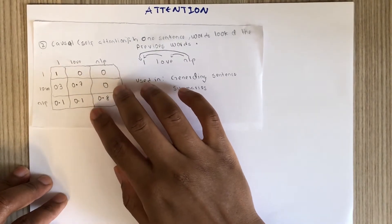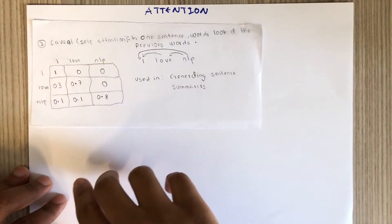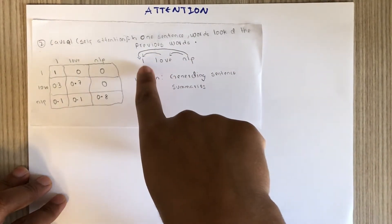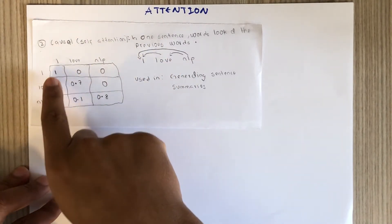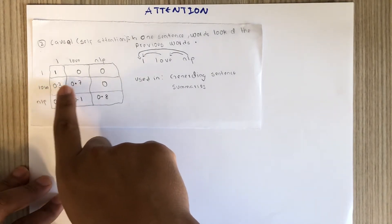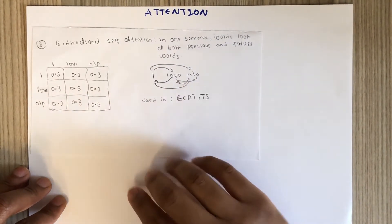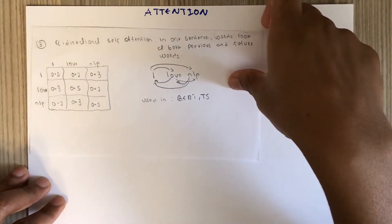The second type of attention, which is what we are actually going to look at, is self-attention — specifically causal attention, usually used in generating sentence summaries. For a word in a sentence, it will only look at previous words. For example, in 'I love NLP', 'I' looks only at itself, 'love' attends itself and 'I', and so on. We also have bi-directional self-attention used in BERT and T5, where words can also look at future words.